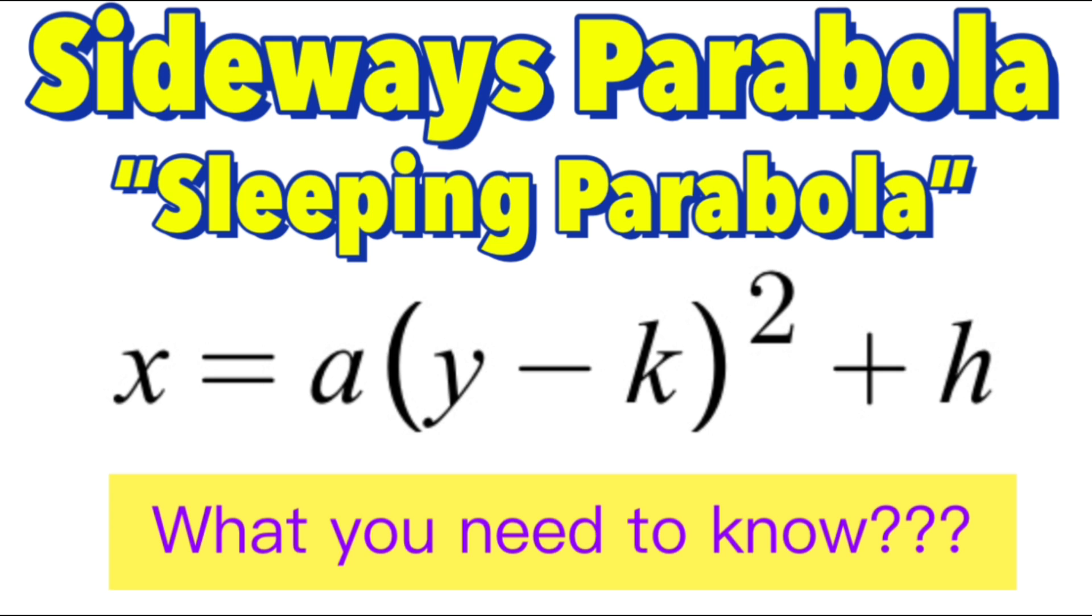We remember that the vertex form or graphing form of sideways parabola or sleeping parabola is given in an equation: x = a(y - k)² + h.